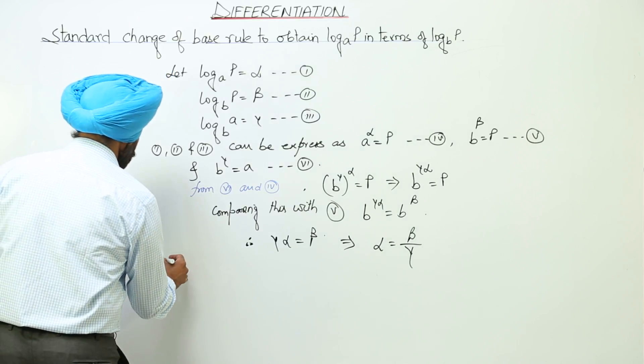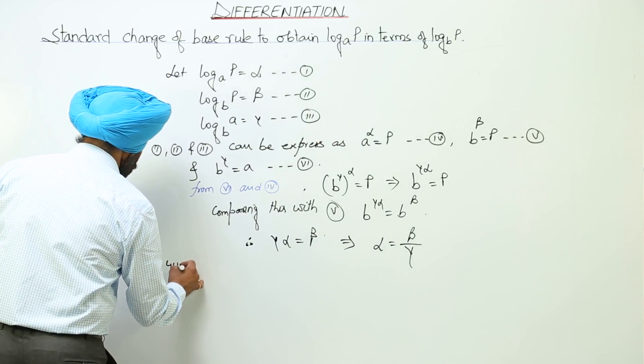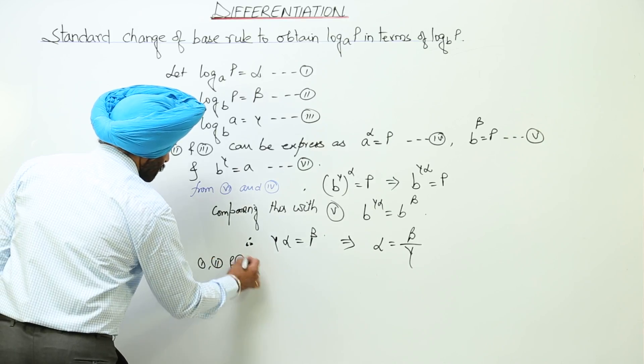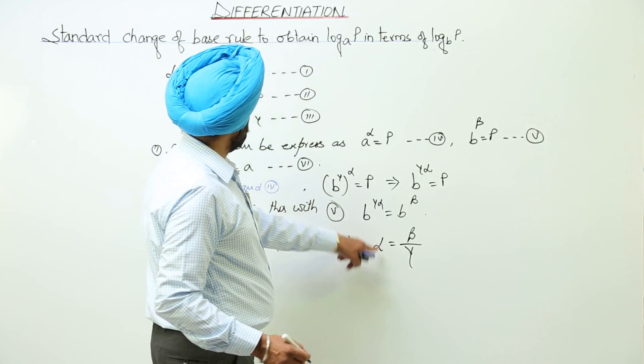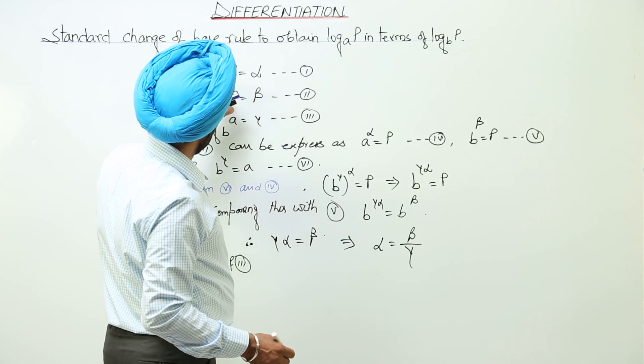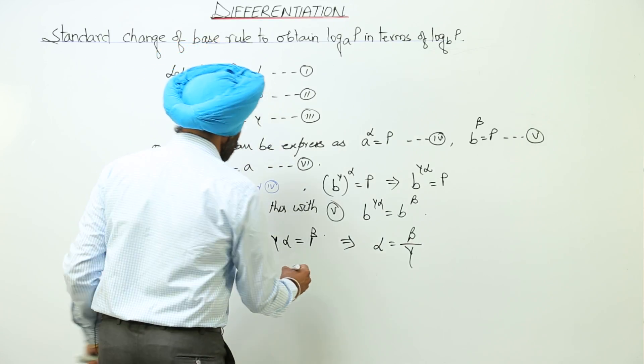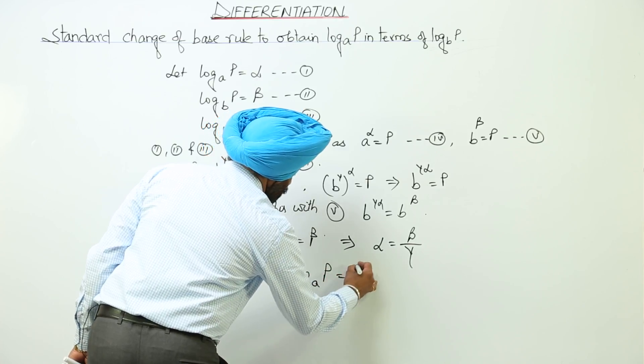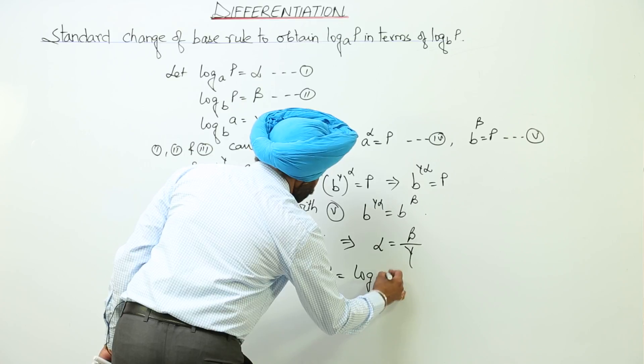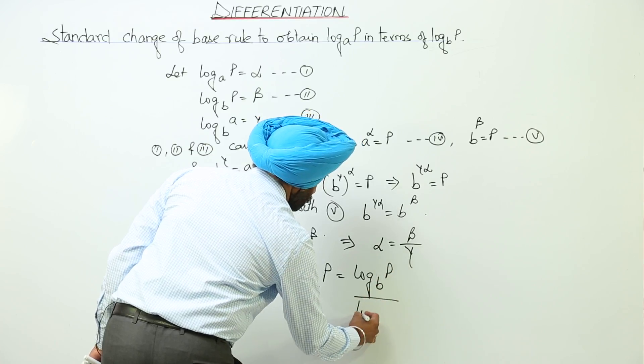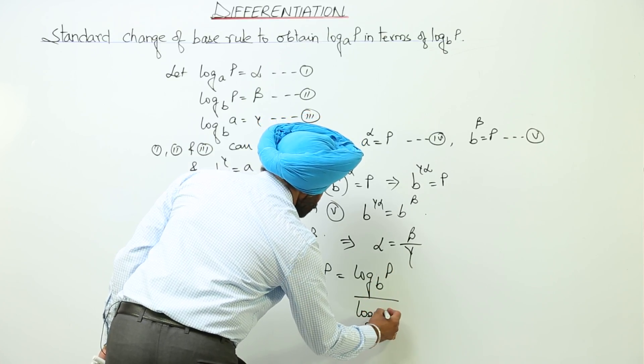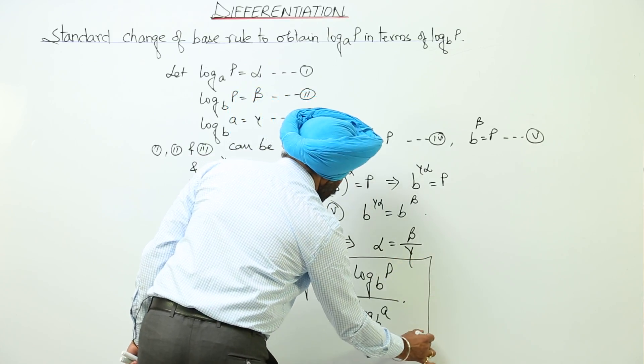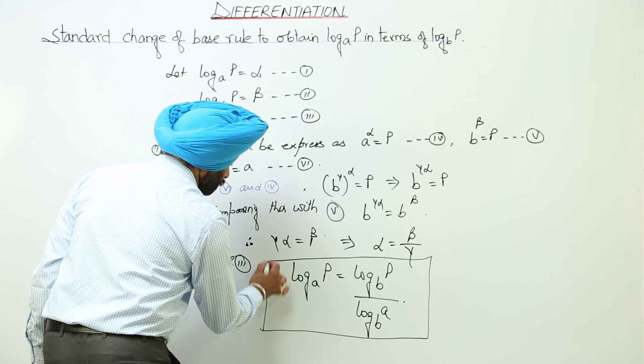Now using equations 1, 2, and 3, what we are getting? In place of these, log base a of p equals log base b of p divided by log base b of a. So this is the change of base rule formula.